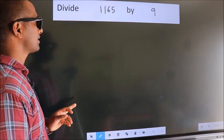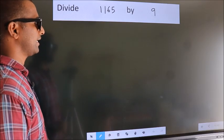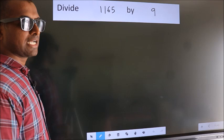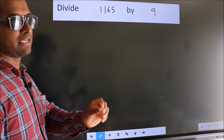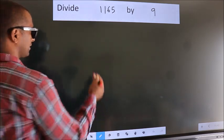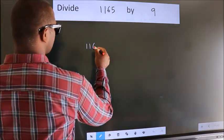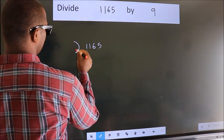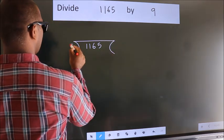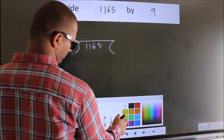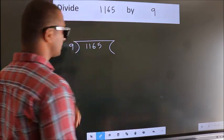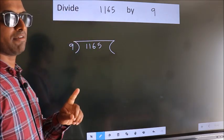Divide 1165 by 9. To do this division, we frame it in this way: 1165 here, 9 here. This is step 1.